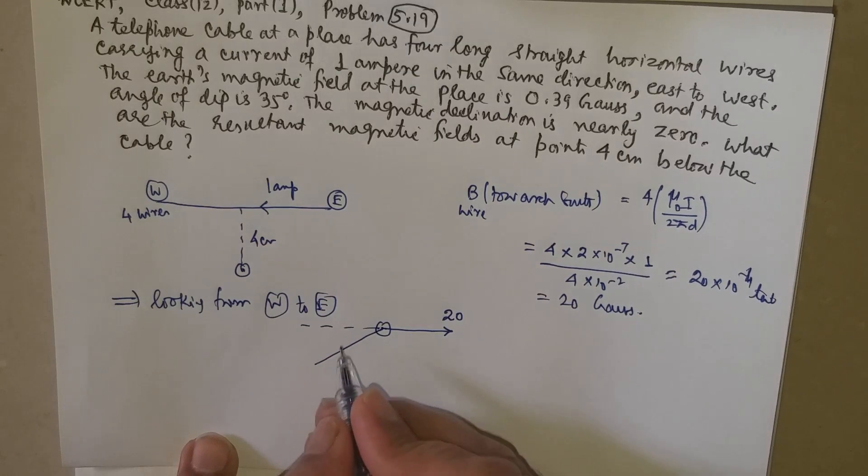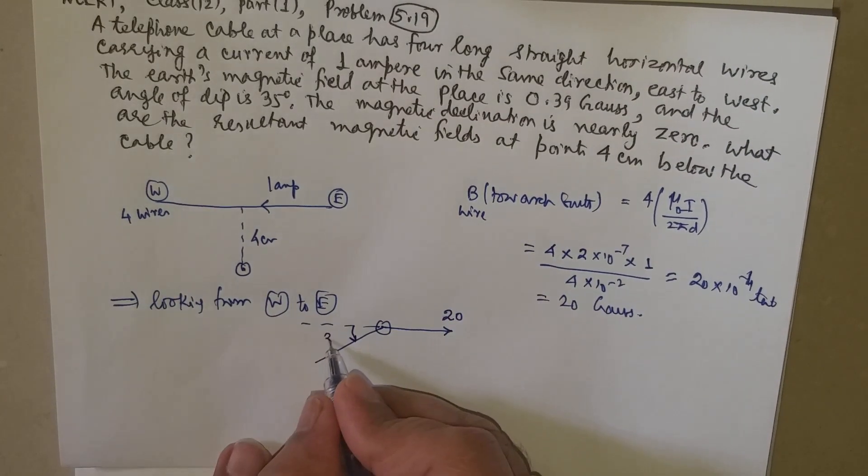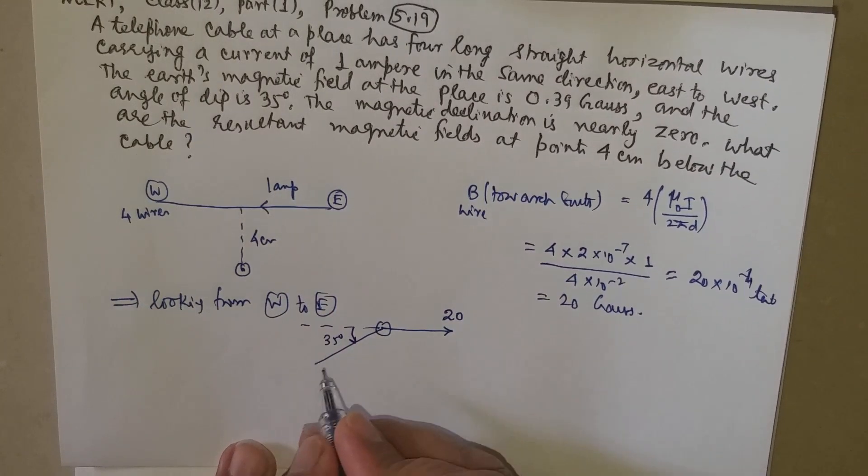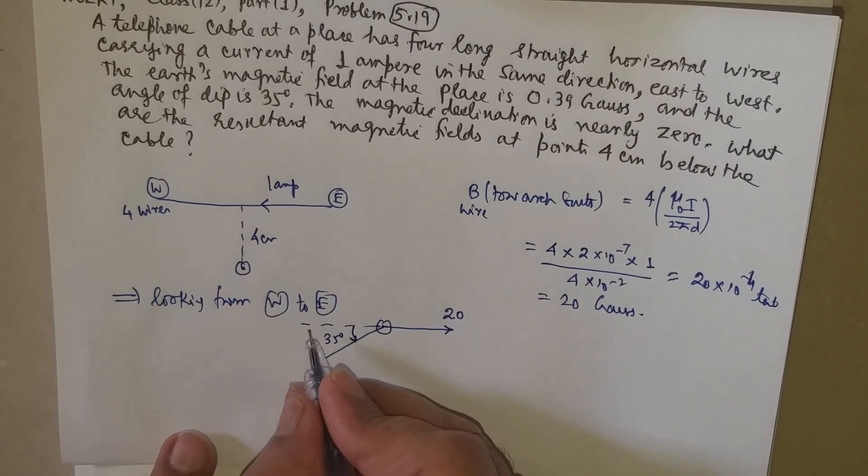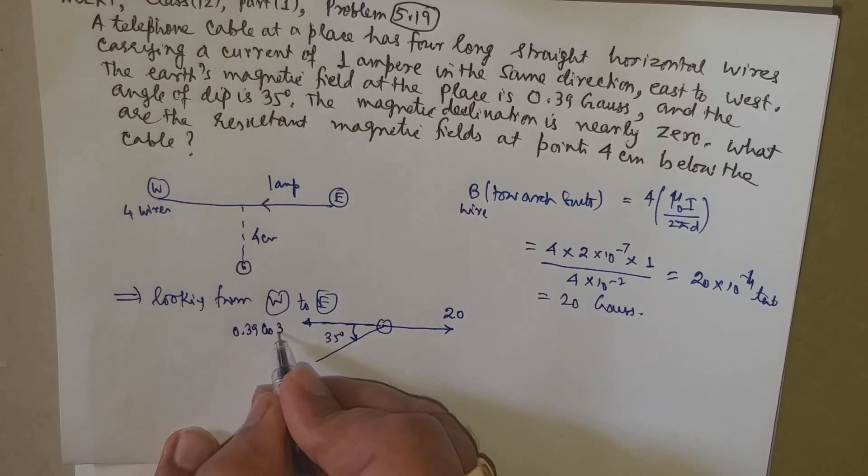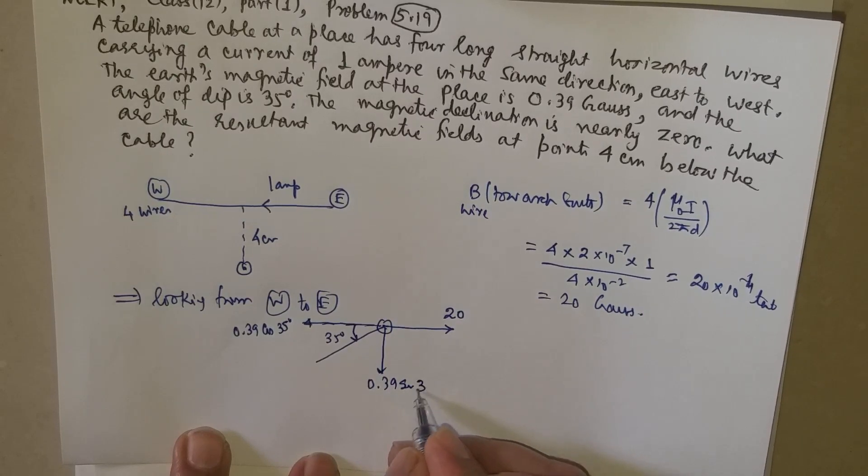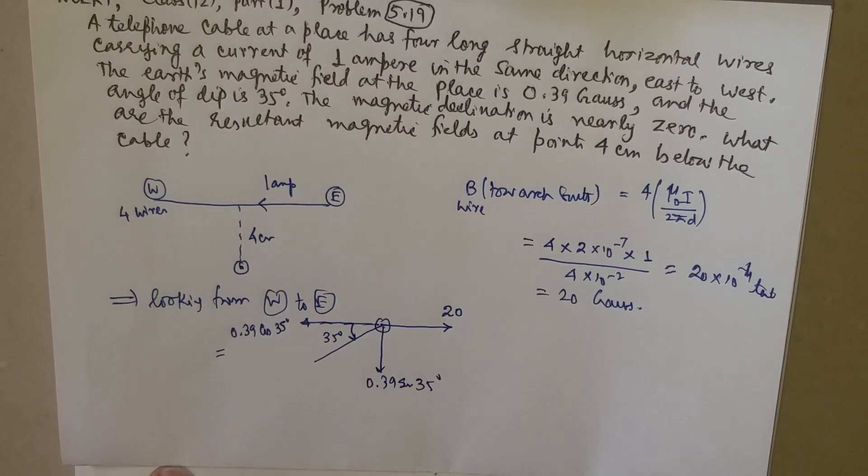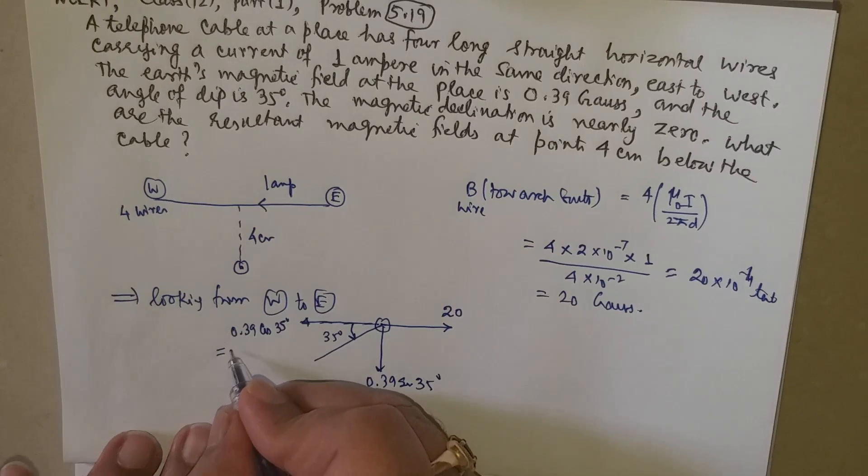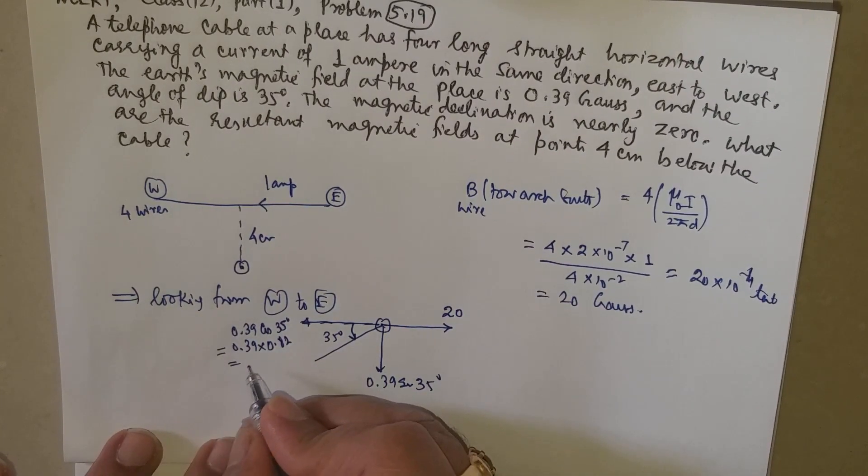The magnetic field due to the earth will be from south to north but it will be inclined at an angle as they have given as 35 degrees. So this magnetic field which is 0.39 will have components as 0.39 cos 35° and 0.39 sin 35°.